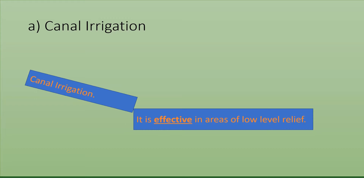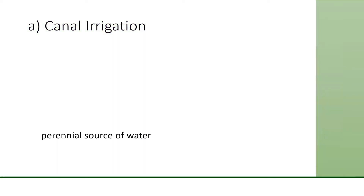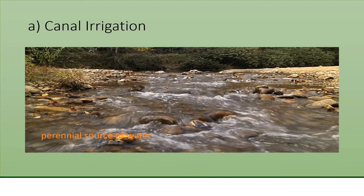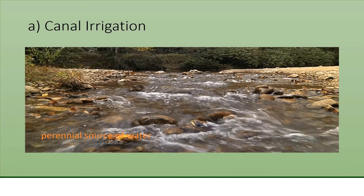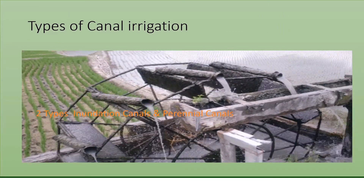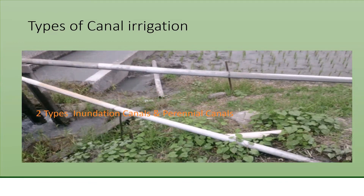Canal irrigation is a very effective source where water is perennial. In canal irrigation, we can divide it into two types: one is inundation canals and two is perennial canals. Inundation canals cover a very effective area.